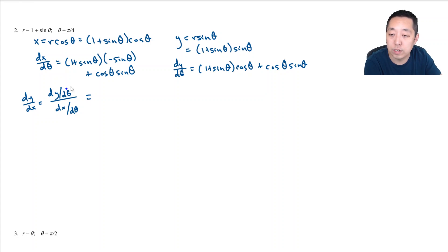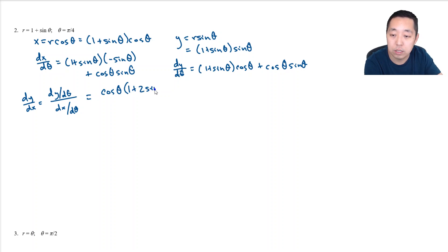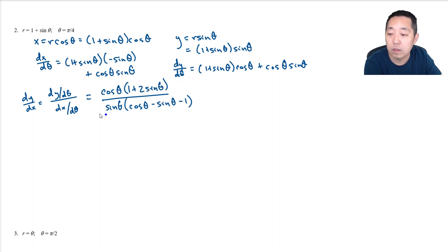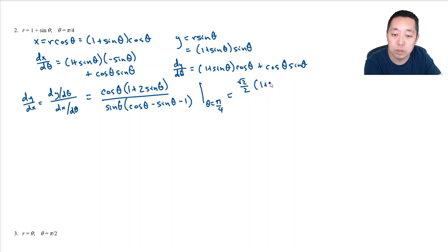The derivative dy/dx simplifies by factoring. In the numerator I factor out cosine theta and get cosine theta times (1 plus 2 sine theta). In the denominator I factor out sine theta... actually I get (1 plus sine theta)(negative sine theta) plus cosine squared theta. Evaluating at theta equals pi over 4: cosine of pi over 4 is root 2 over 2, so the numerator becomes root 2 over 2 times (1 plus 2 times root 2 over 2). The denominator involves root 2 over 2 terms minus 1.